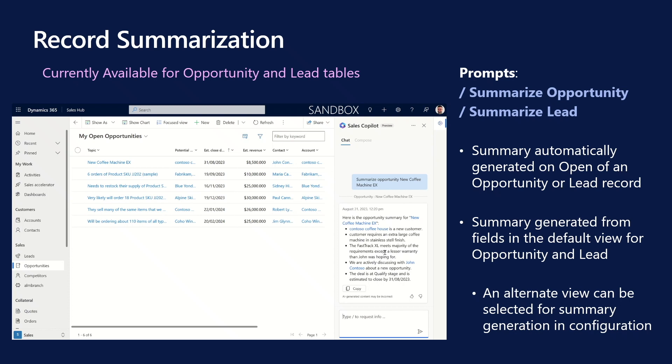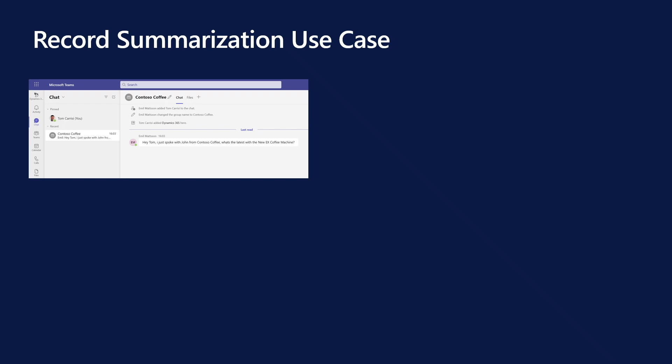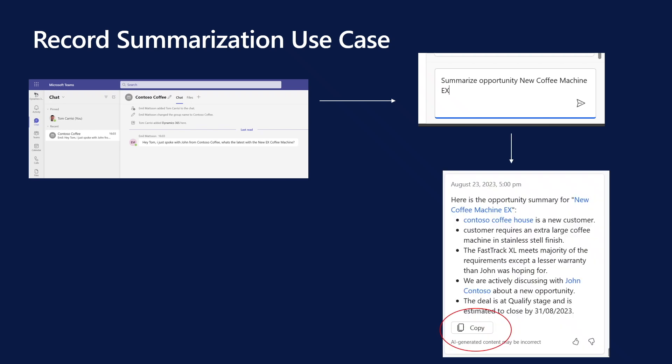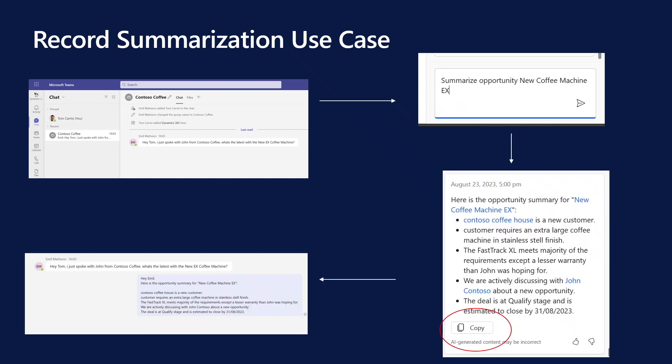Ensure that your sales team agrees on the top seven fields that are most relevant for your business. We have heard many great use cases from customers during the Public Preview. For example, a colleague is asking for the summary of an opportunity. The seller can quickly use the Summarize Opportunity prompt to get the summary automatically generated and then copy the summary and paste it back to the colleague. This will save time for the seller by avoiding creating the summary manually, but also for the colleague that can avoid the need to manually review records and look for relevant information.